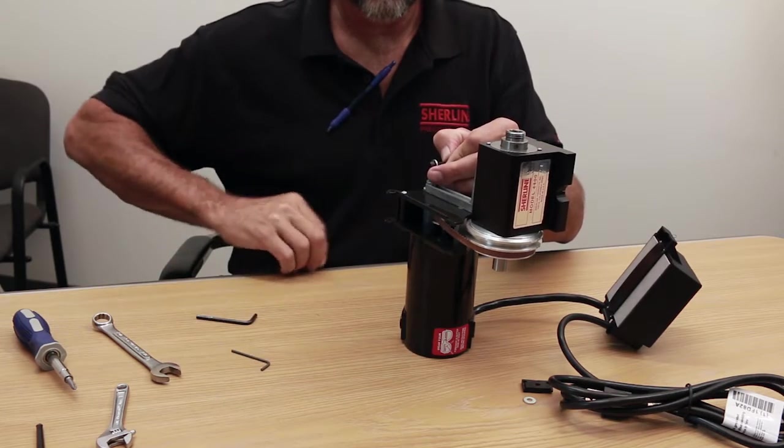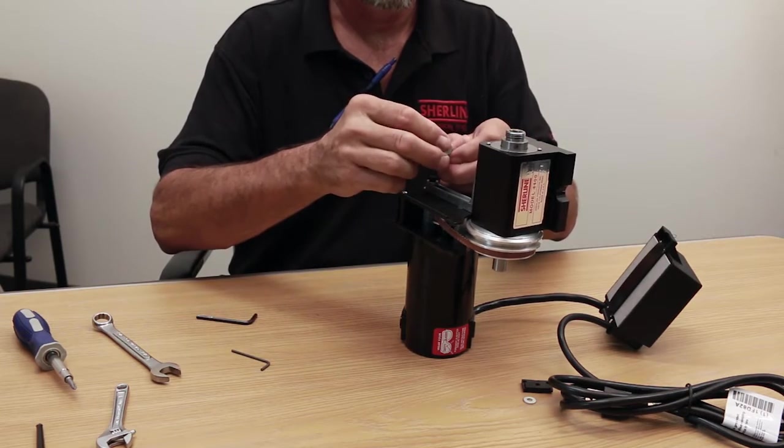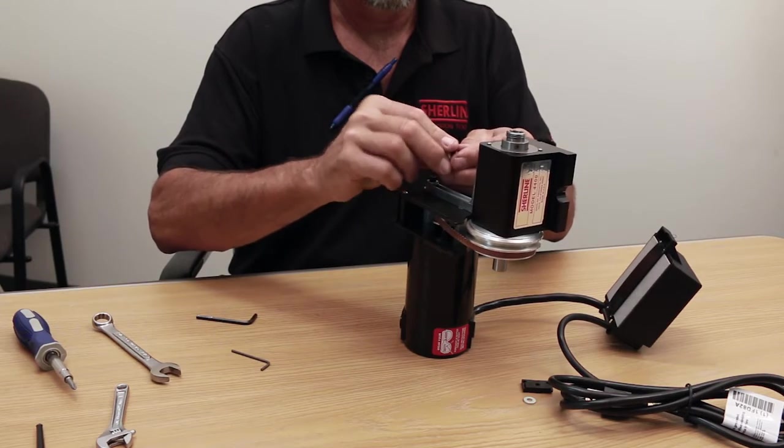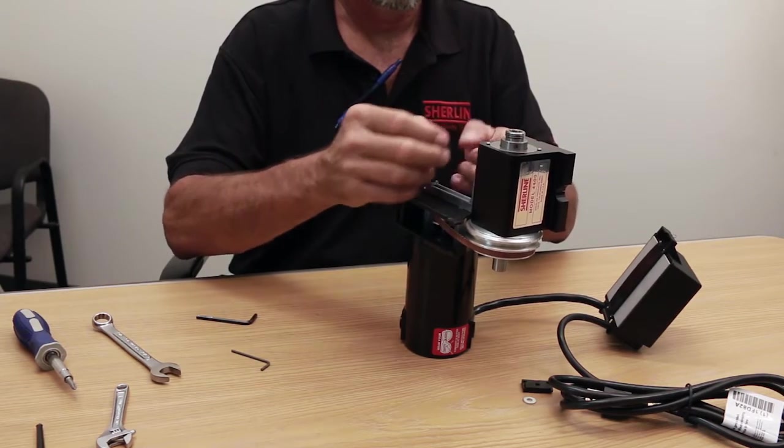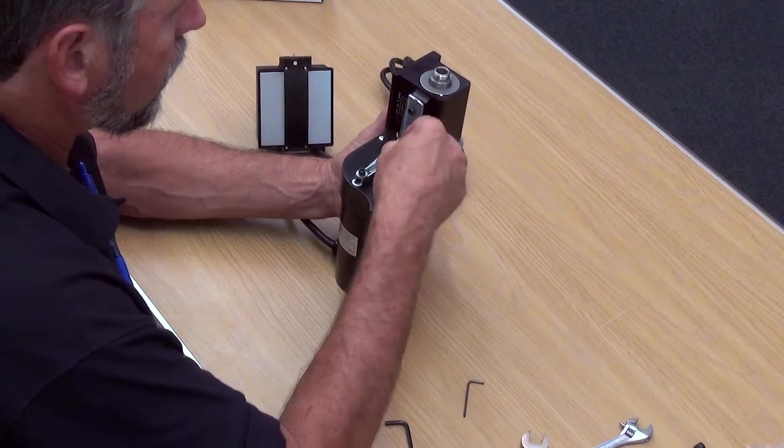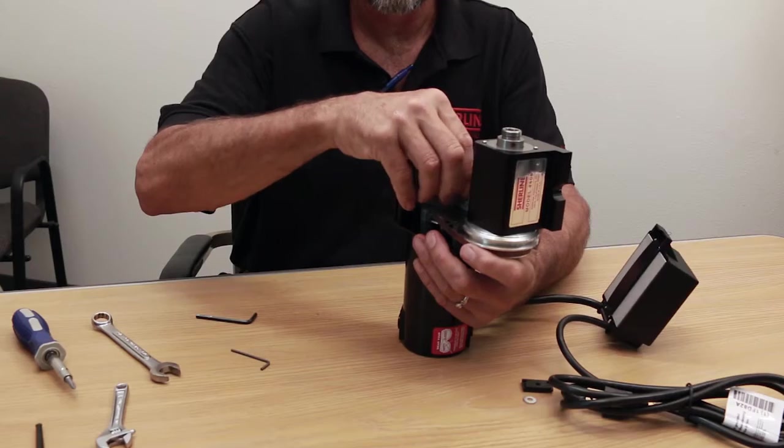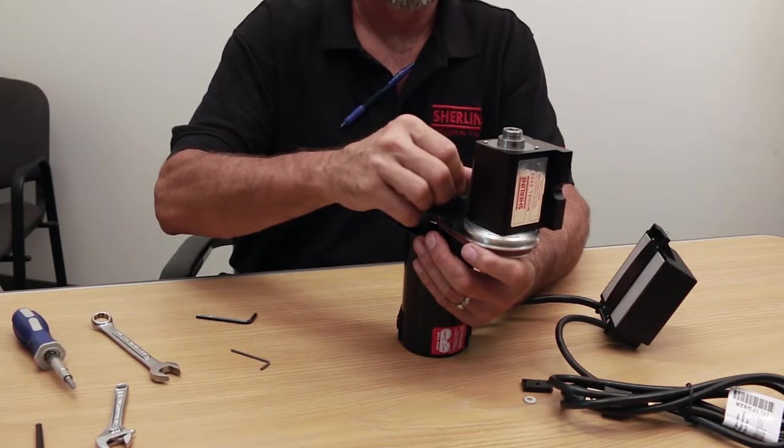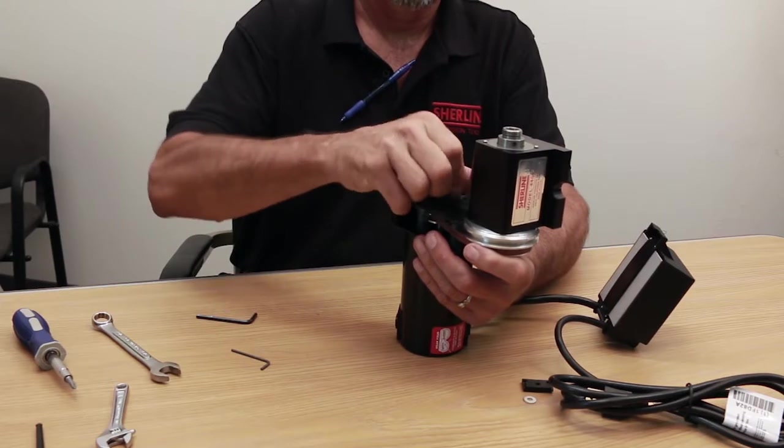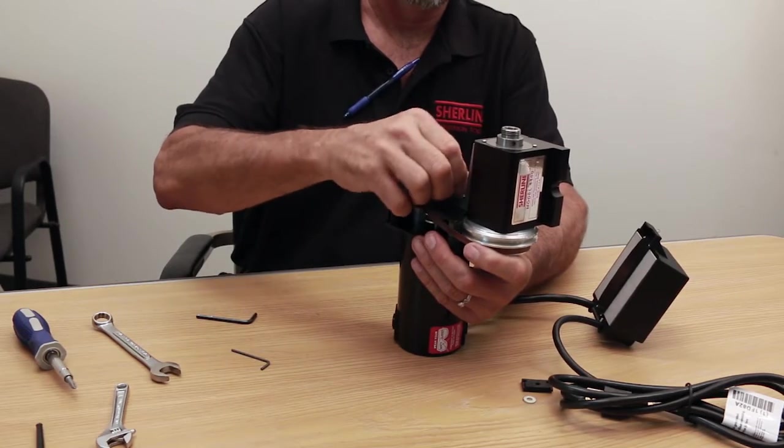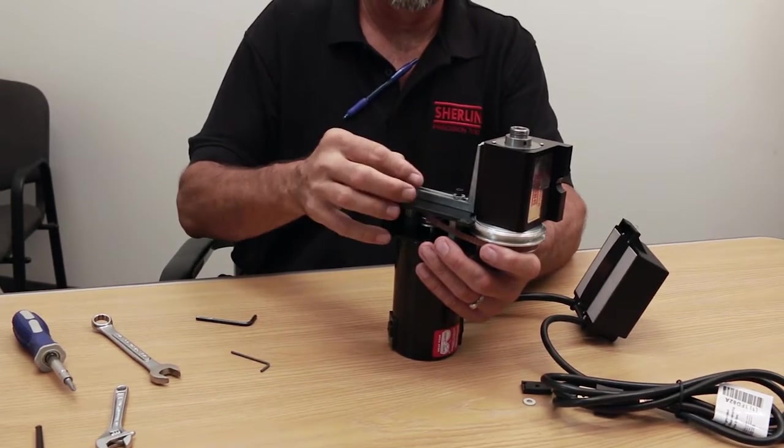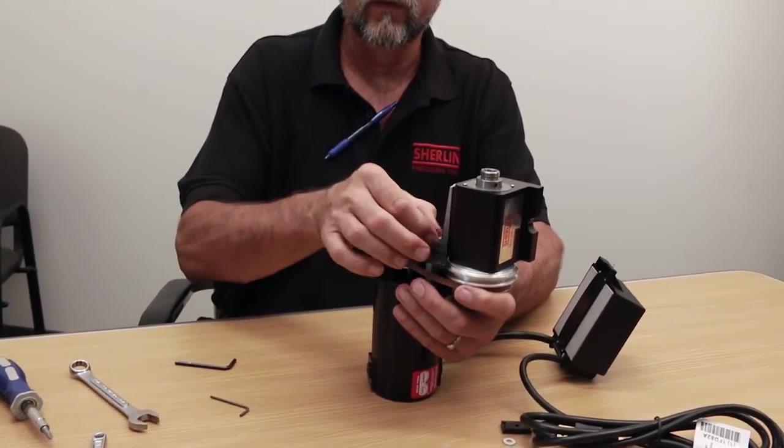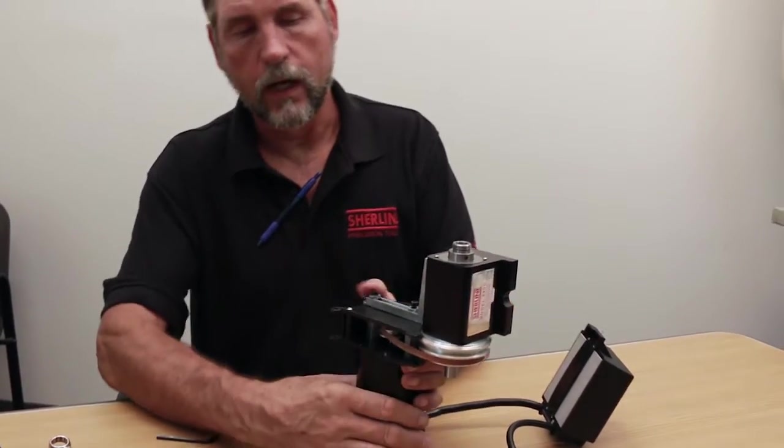Two washers on this screw. Wiggle the bracket a little bit if you need to to get the holes to line up with the slot. Again, just put it in finger tight. At this point, you don't want to have it too tight. The washer should still move because you're going to have to adjust in and out.